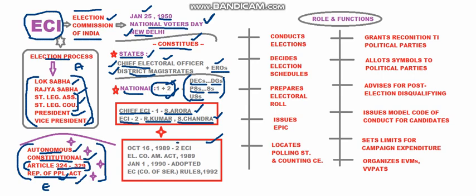The two additional Election Commissioner posts were first created on October 16, 1989, through the Election Commissioners Amendment Act of 1989. This was adopted on January 1st, 1990. The Election Commissioners Conditions of Service Rules 1992 govern the position, salaries, and allowances of these commissioners in this one-plus-two setup.